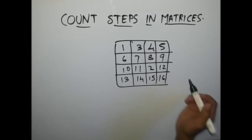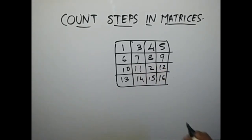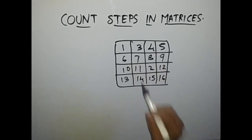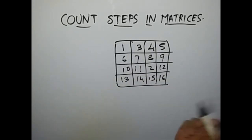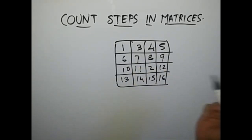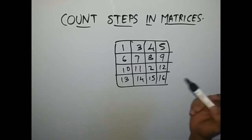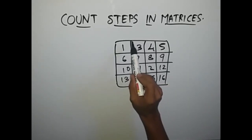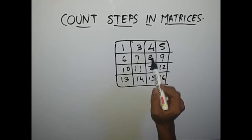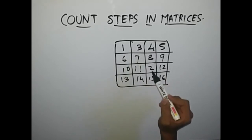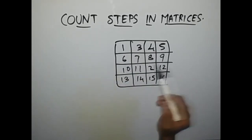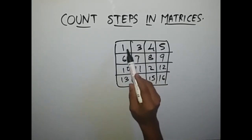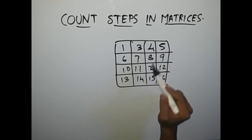Now let's take a bigger example. We have to travel from 1 to 16 — a slightly bigger example. First, we have to travel from 1 to 2. 1 is present here and 2 is present here. We travel by going from 1 to 3, then 3 to 4, then 4 to 8, then 8 to 2. So total number of moves required is 4.